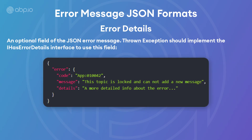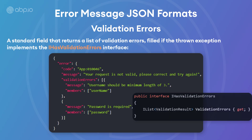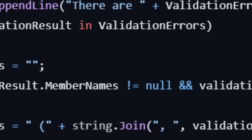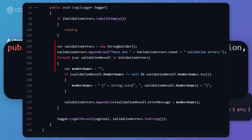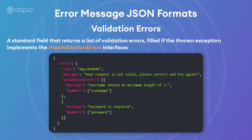The error details is another optional field of the JSON error message, which is also a simple string that returns the details of an error. To use it, the thrown exception should implement the IHasErrorDetails interface. If a validation error occurs and the thrown exception implements the IHasValidationErrors interface, then it'll return a list of validation results that contains the validation errors. The ABP validation exception implements the IHasValidationErrors interface, and when a request input is not valid, the validation exception is already thrown by the framework itself. Usually you do not need to deal with validation errors unless you have highly customized validation logic.